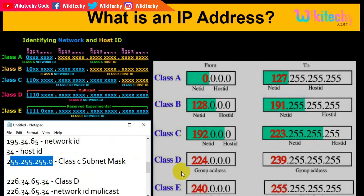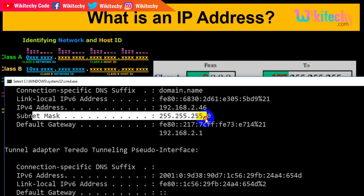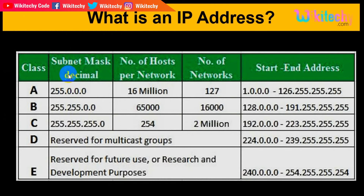This is how you are able to identify a network. Class A has a subnet mask of 255.0.0.0, with almost 16 million hosts and only 127 networks. Class B has 65,000 hosts and 16,000 networks. Class C has 254 hosts and 2 million networks, with the IP range from 192 to 223.